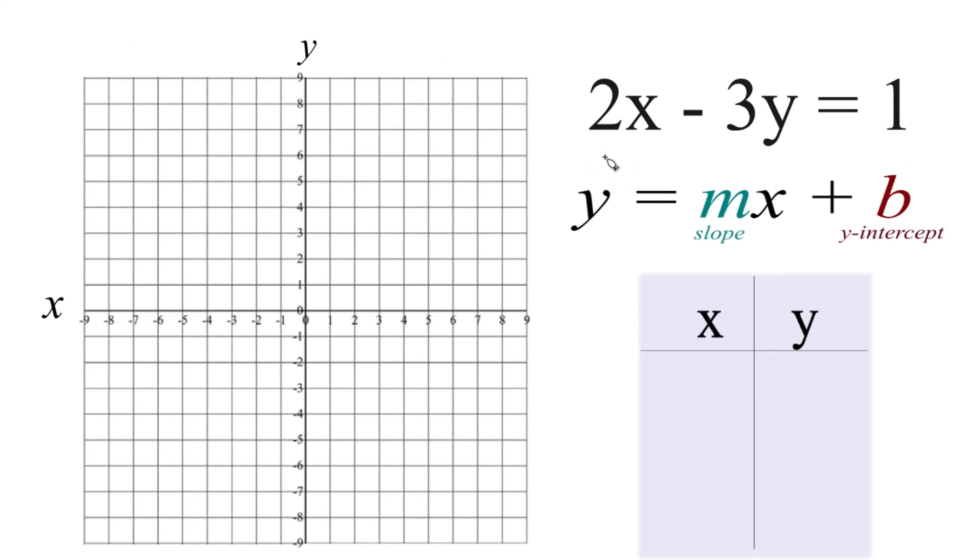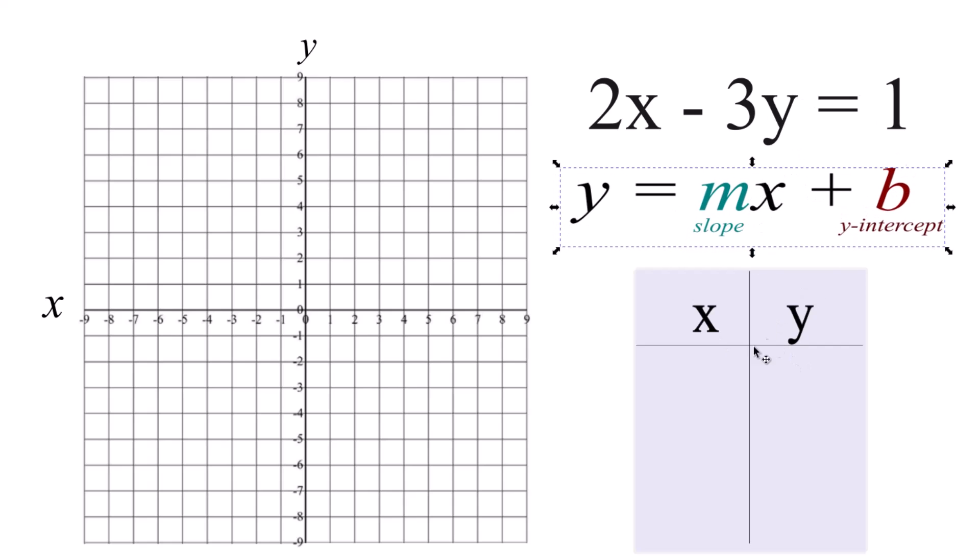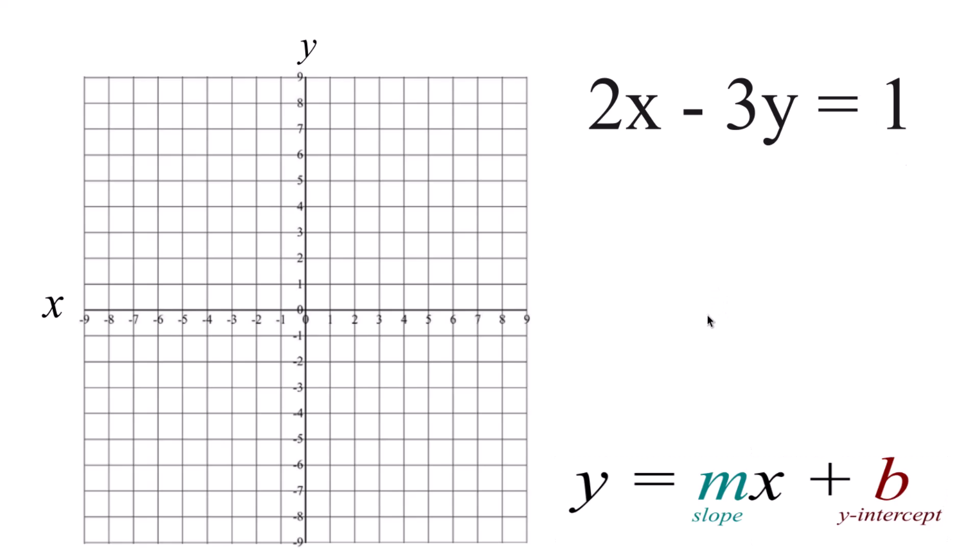Let's graph the linear equation 2x minus 3y equals 1. We could use a table of values, put values in for x, get the value for y, and then plot those, or we could use slope-intercept form. This actually turns out to be a lot easier than using the table of values here. So let's do that. You get the same graph either way.